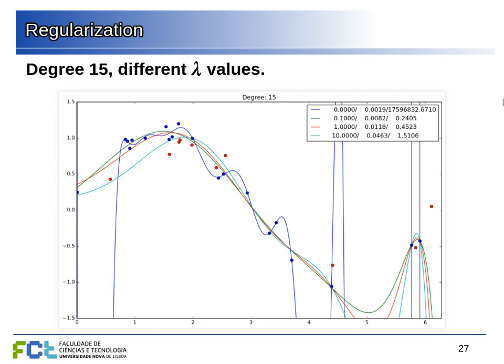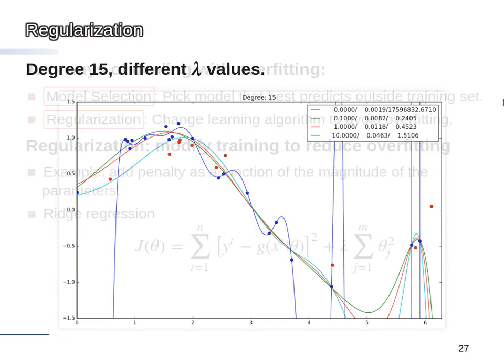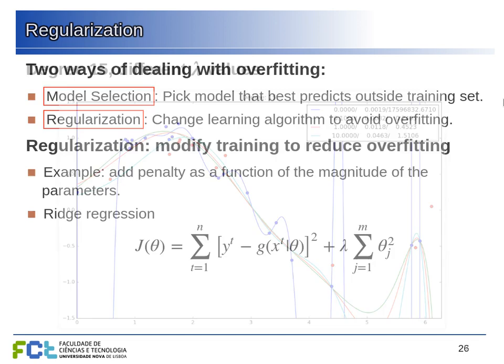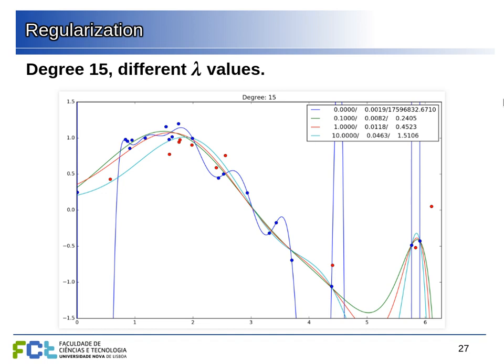Here is an example. With no regularization — lambda equal to zero — using a degree-15 polynomial, the curve goes everywhere and can even jump outside the figure because all coefficients can be arbitrarily high. With a small penalization, say lambda equal to 0.1, we get the green curve, which is much smoother. Now if the parameters grow too high, this penalty term increases, so we only allow parameters to grow as long as it still helps decrease the error.